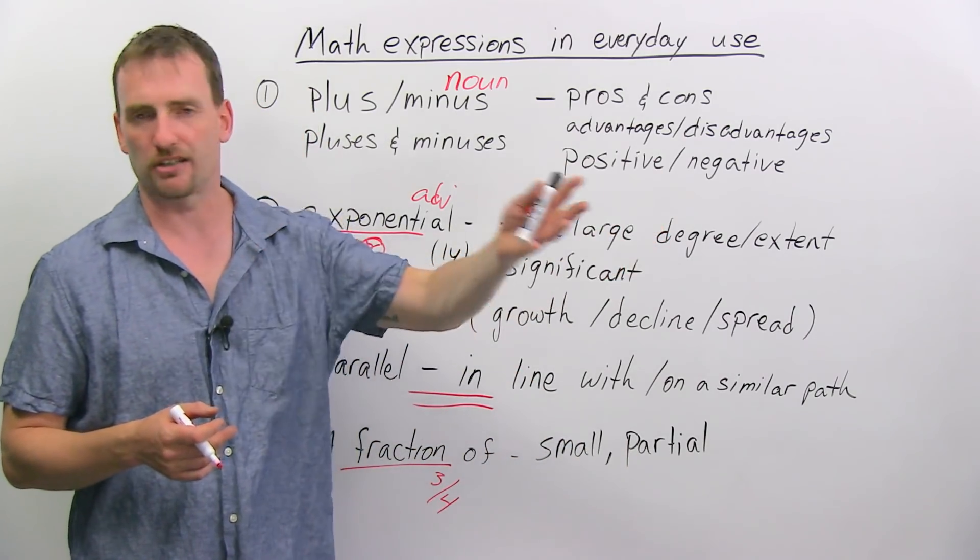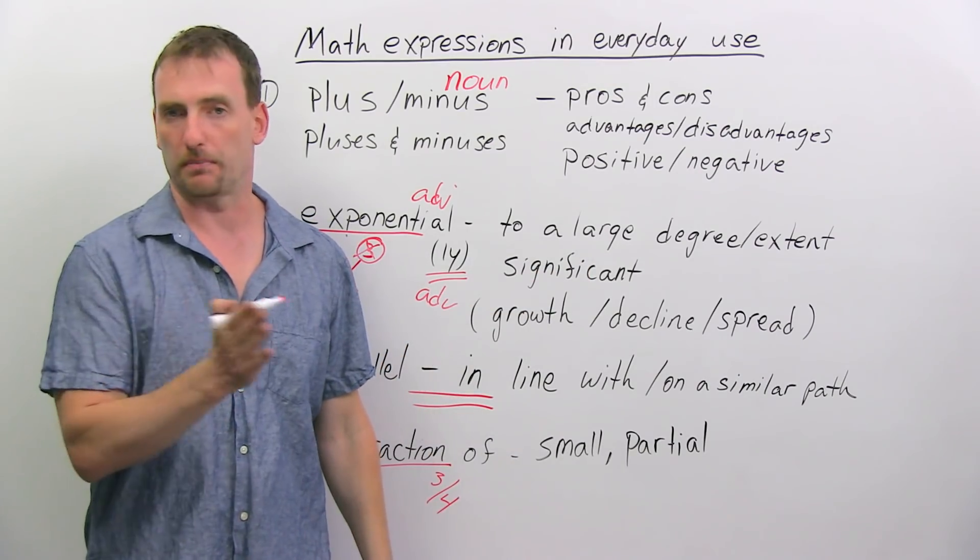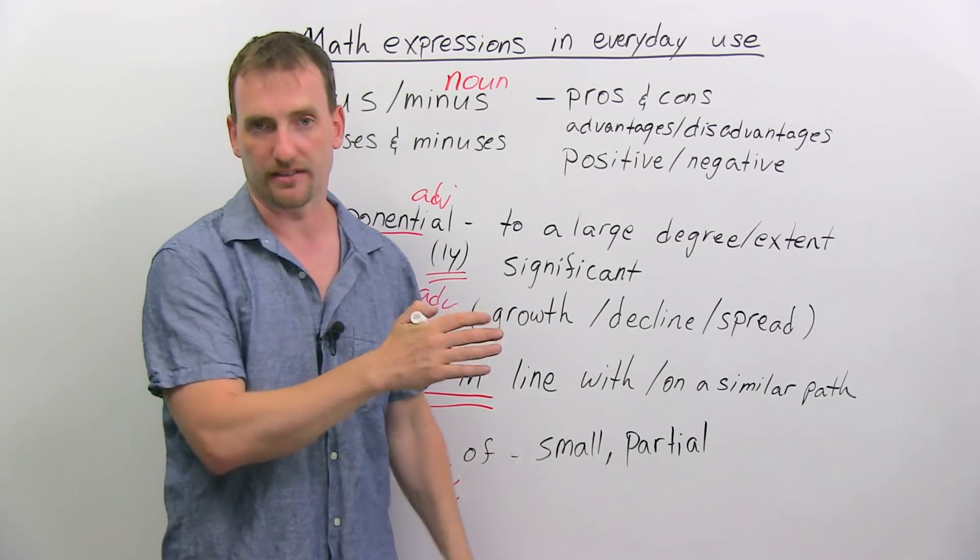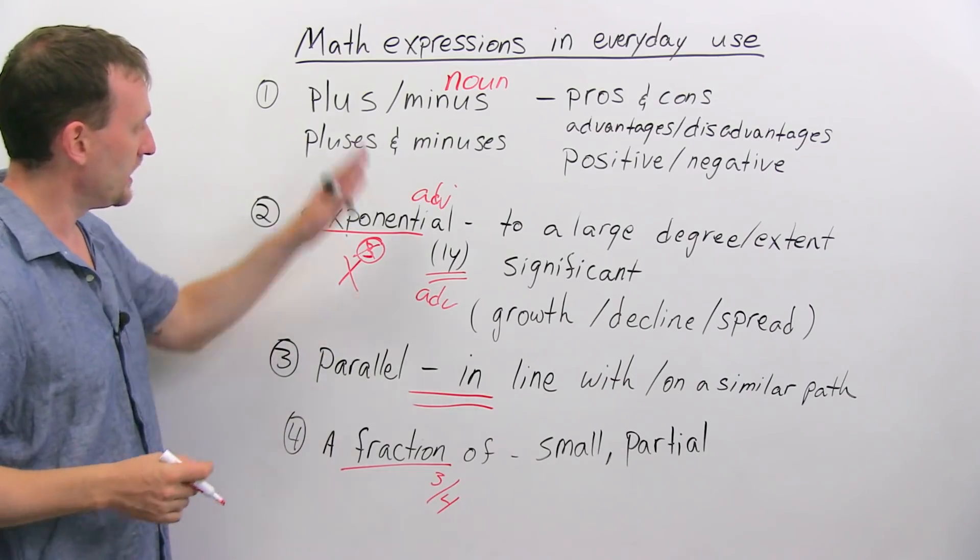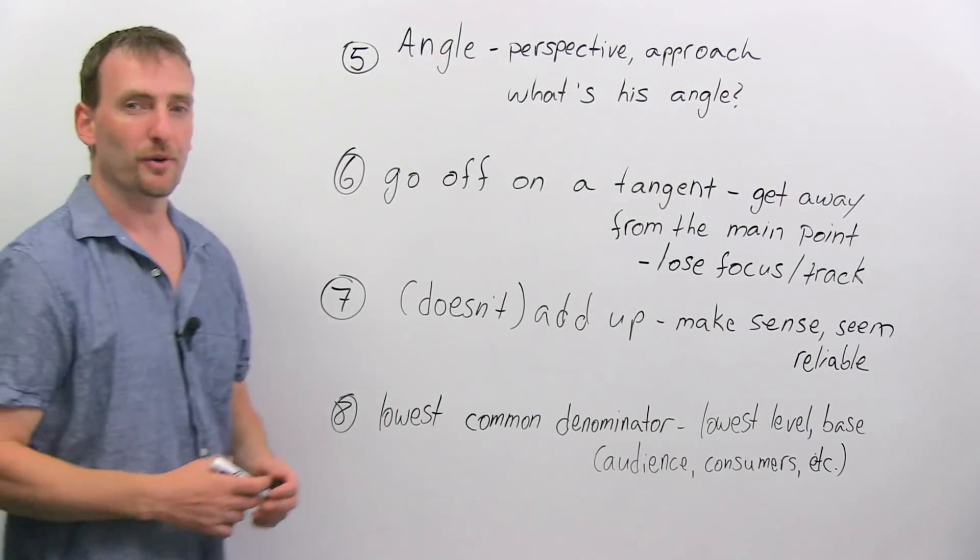So they charge a thousand bucks, I charge only six hundred. It's a partial, it's a fraction of their price, much lower. So, so far we have four, let's look at four more.